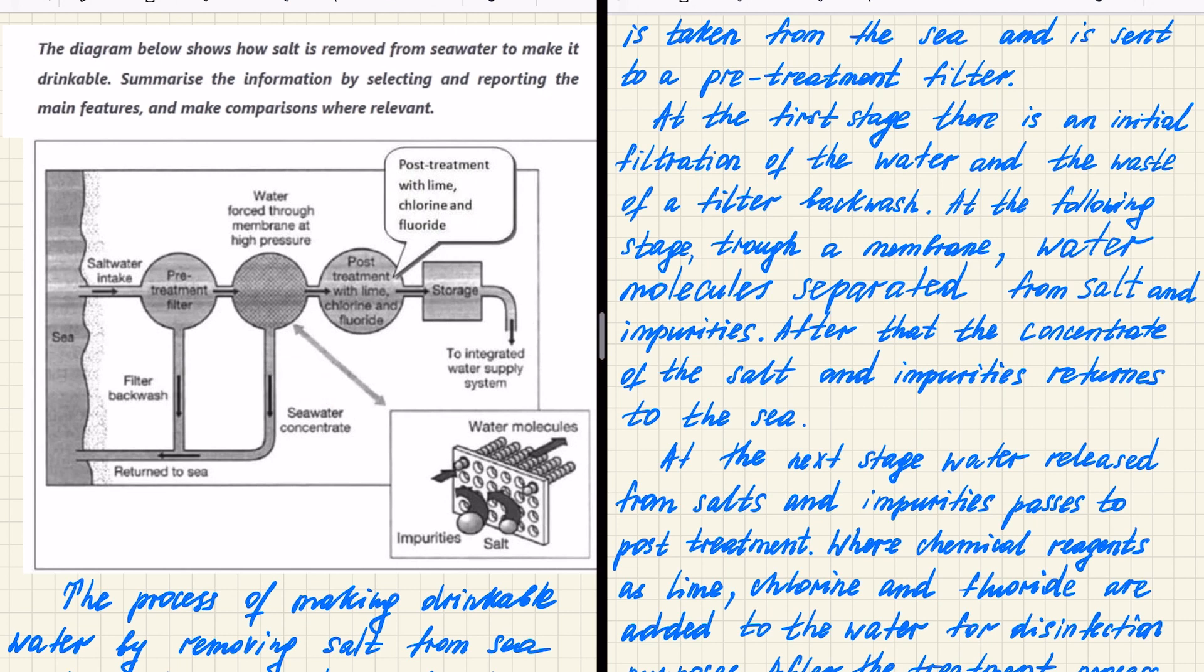At the next stage, water released from salts and impurities passes to post-treatment. So, following process is post-treatment process. And we describe what exactly happening within this process. This is basically following paragraph. So we have three main processes, which we divided into three body paragraphs. And this is the third paragraph. Where chemical reagents as lime, chlorine, and fluoride are added to the water for disinfection purposes. So we are saying about chemical treatment here and about adding all of these chemicals in order to disinfection of it.